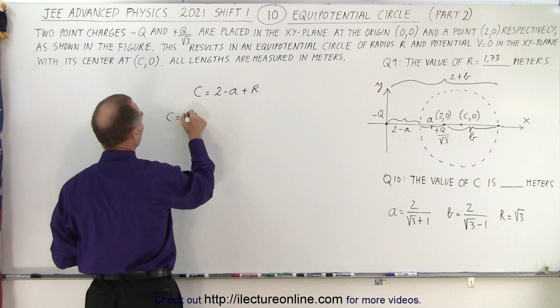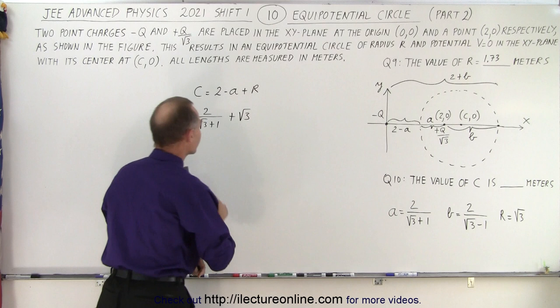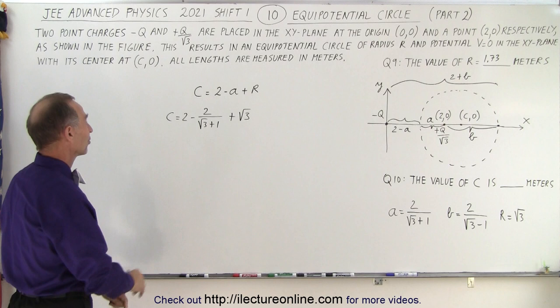So then what we do is plug in what we have, so we have C is equal to 2 minus A. A is 2 divided by the square root of 3 plus 1, and then we have to add that to the square root of 3. And we don't have a calculator. That's the challenge of these tests, no calculators allowed.